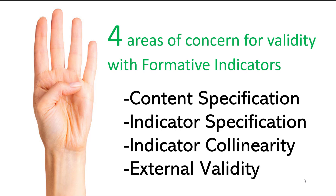Tied to content specification is indicator specification. With higher-order constructs, there may be five unobservables that form a higher-order concept, but within each first-order construct, are you asking enough questions to fully capture it? Do you have enough indicators, or just single indicators? If so, you're not achieving sufficient indicator specification. The third concern is indicator collinearity — multicollinearity is a significant issue with formative indicators and can be problematic in assessing each indicator's contribution to the concept.